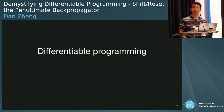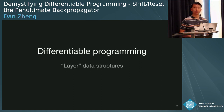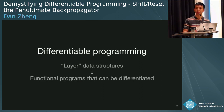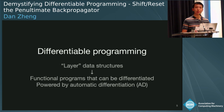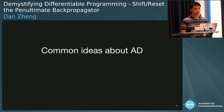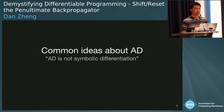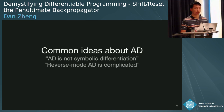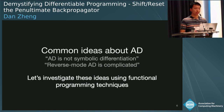As the PL community is becoming more interested in deep learning, there's been a trend towards differentiable programming. Rather than thinking of neural networks as layered data structures, we can think of them as functional programs that can be differentiated. All of this is powered by a technique called automatic differentiation, or AD — an algorithmic way to compute derivatives of programs. Today I'll be talking about AD and investigating some common ideas: that AD is not symbolic differentiation, and that reverse mode AD is complicated. Let's use functional programming techniques to demystify things.